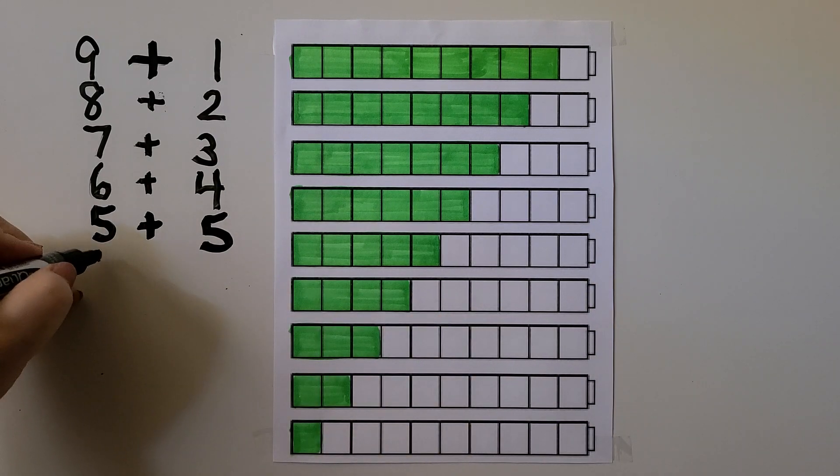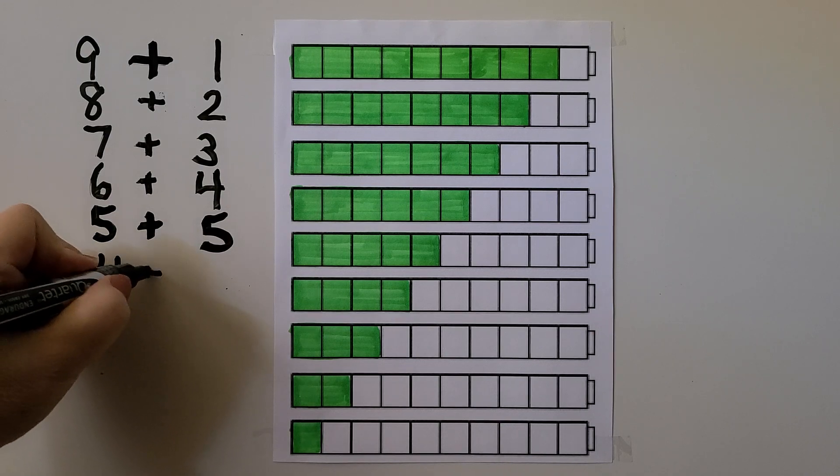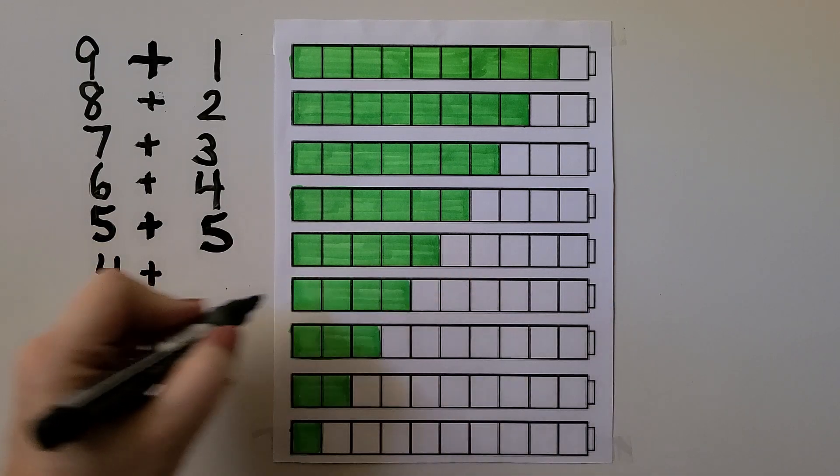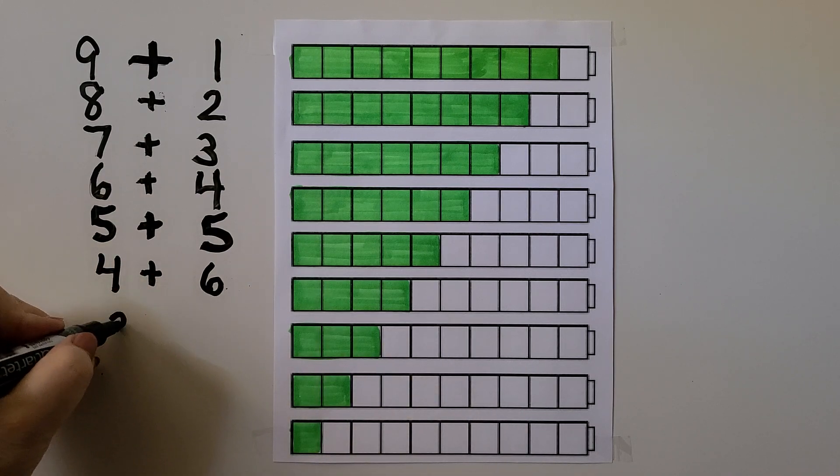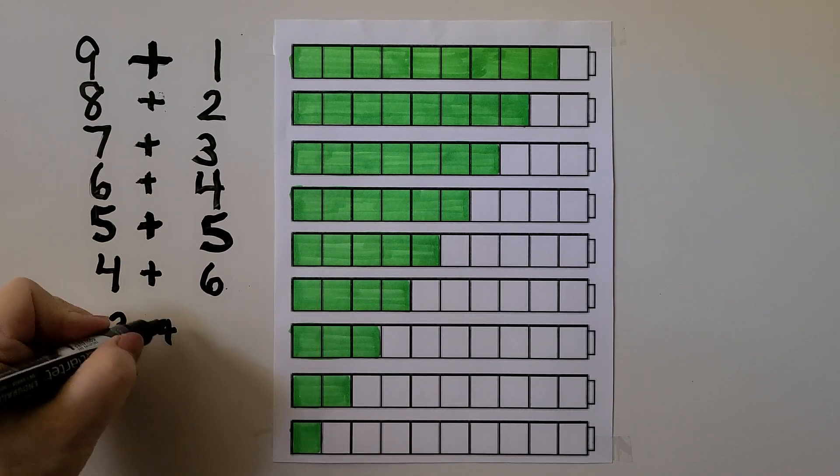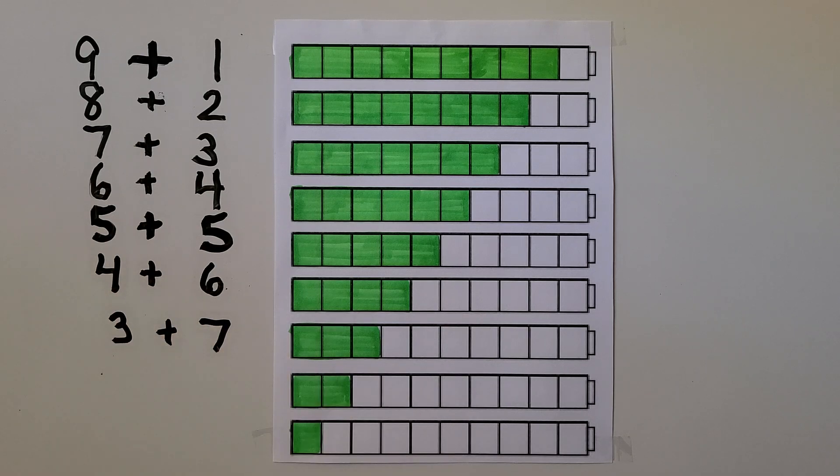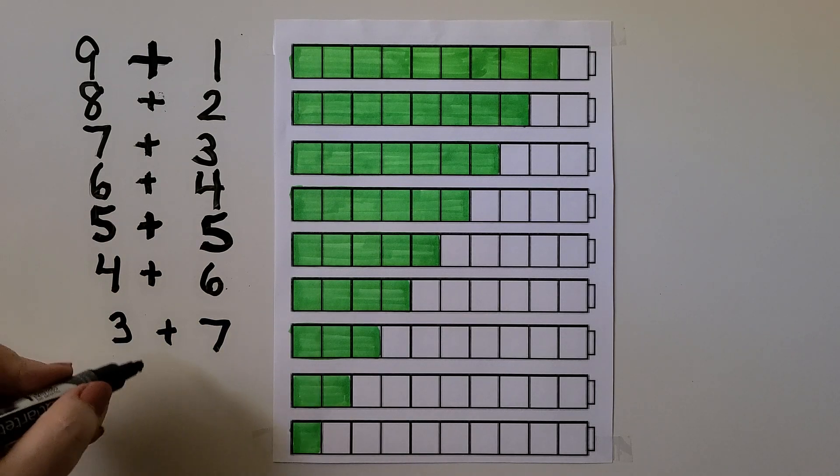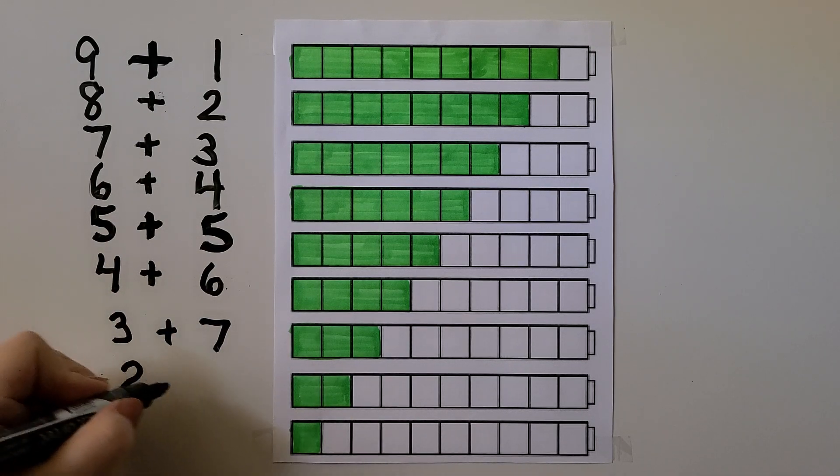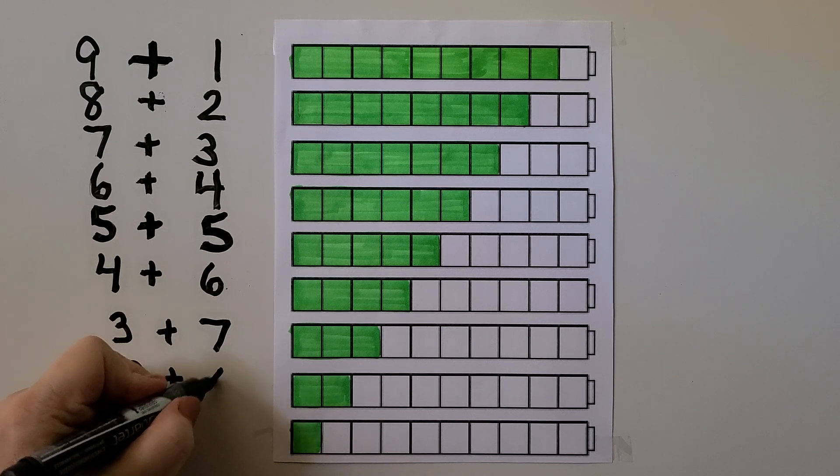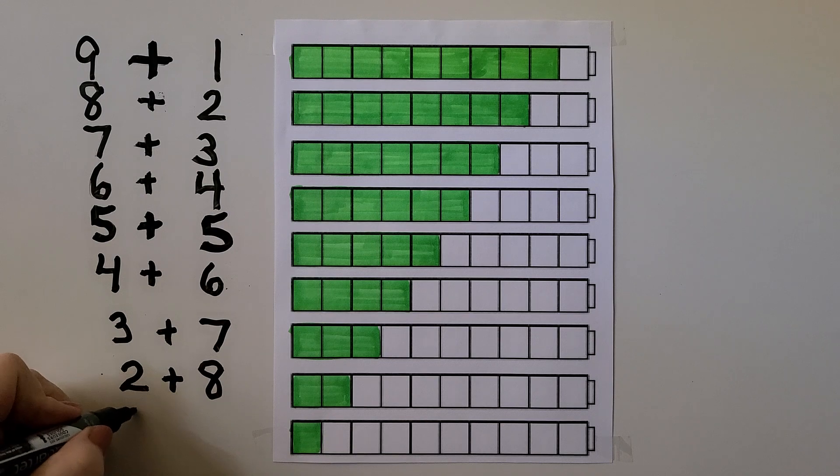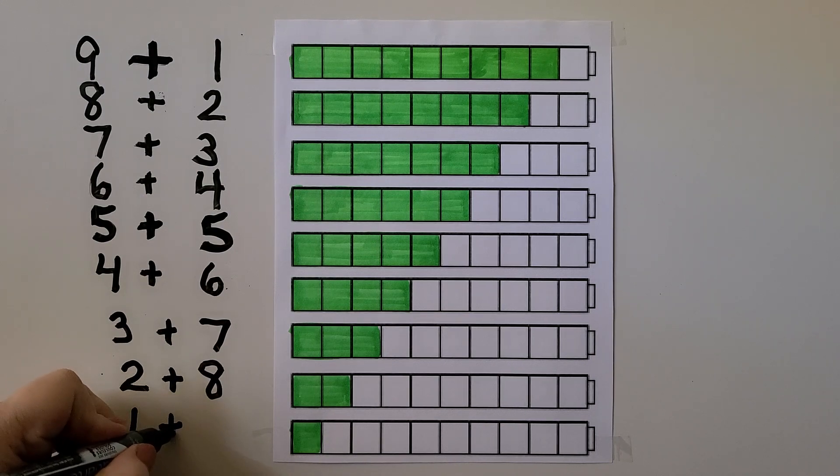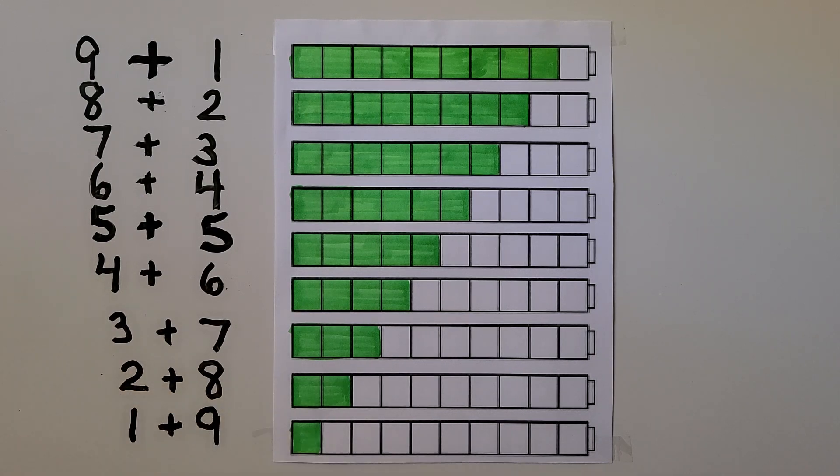Here we have 4 green, we can add 6 white to make 10. Here we can add 7 white ones to make a 10. Here we have 2 green and we can add 8 white ones to make a 10. And here we have 1 green and we can add 9 white ones to make a 10.